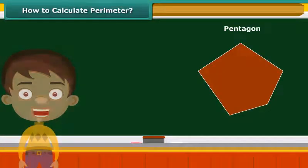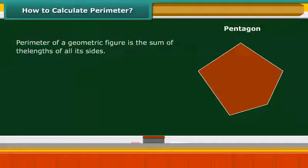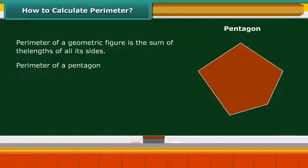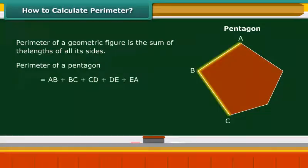We have seen that the perimeter of a geometric figure is the sum of the lengths of its sides. A pentagon is a closed geometric figure of five sides. Suppose the lengths of the five sides AB, BC, CD,